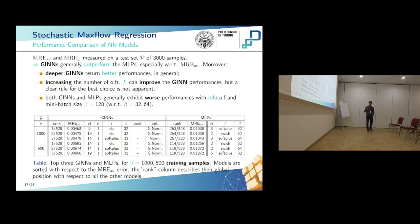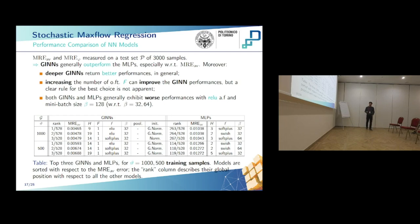In general we observe that the GINNs outperform the MLPs. In particular, deeper GINNs yield better performance, and increasing the number of output features of the hidden layers also shows improvement, though a clear trend is not fully evident and requires further analysis. We also observe that both architectures have worse performance with the ReLU activation function — probably because it is too linear for our regression task — and worse performance with larger mini-batch sizes. Looking at the table, in both cases the best 250 or more models are GINNs.